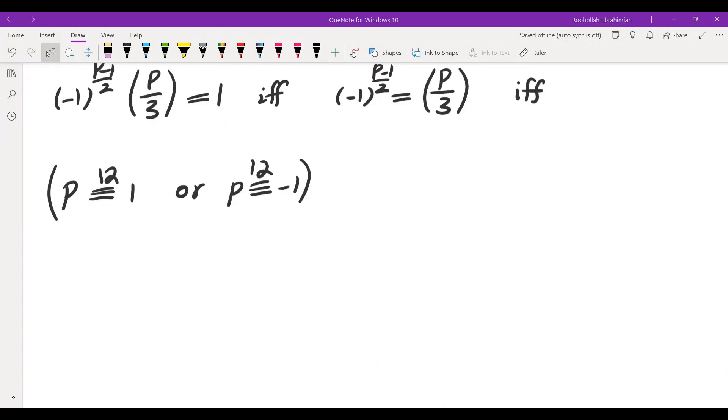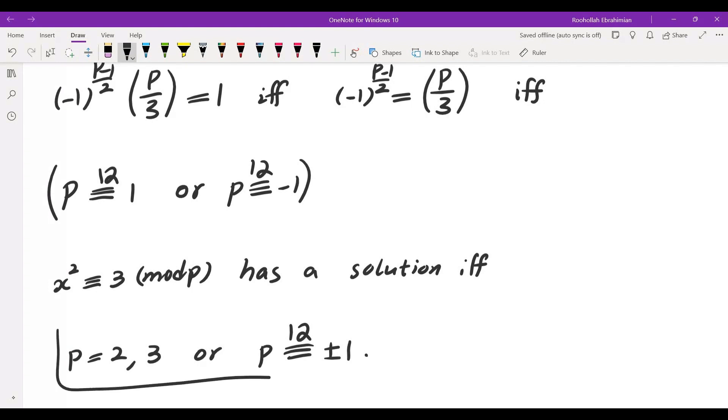Combining this with what we found earlier we note that X squared congruent to 3 mod P has a solution if and only if P is 2, 3 or P is plus minus 1 mod 12. So this would be our final answer.